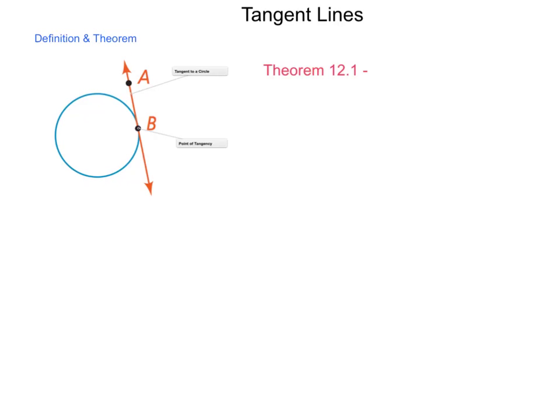One thing that we can look at in a unit on circles is tangent lines. Now tangent lines, as shown in the diagram here, are a line, line segment, or ray that just barely come into contact with the edge of a circle.